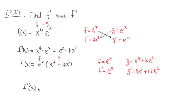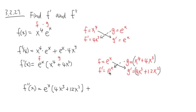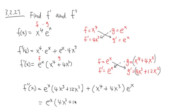Let me write down f double prime of x. I will first pair up e to the x times g prime: e to the x times parenthesis 4x to the third power plus 12x squared, close parenthesis. And I'm going to add. The second part is I pair the g function — using parenthesis accordingly — multiplied with f prime, which is e to the x. So I get x to the fourth power plus 4x to the third power, close parenthesis, times e to the x.